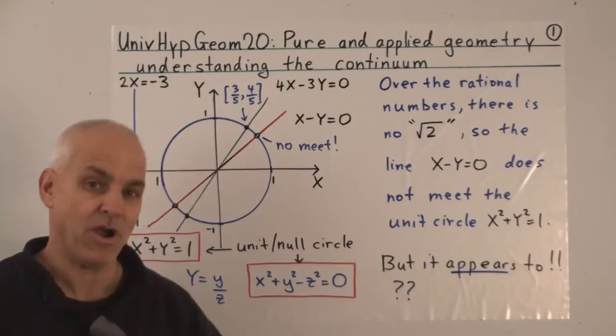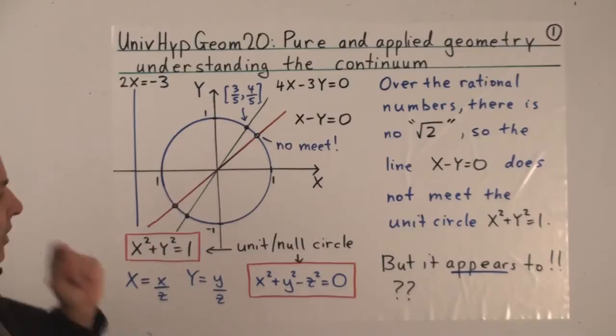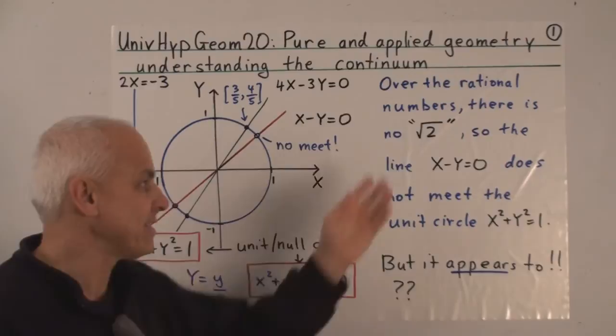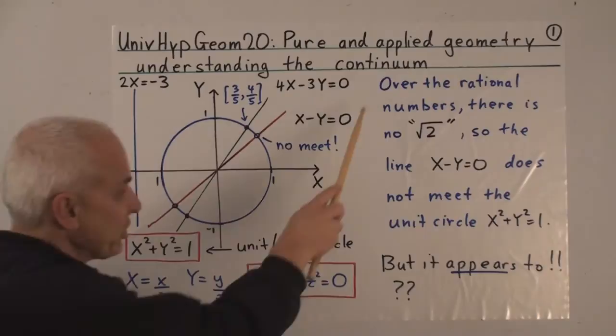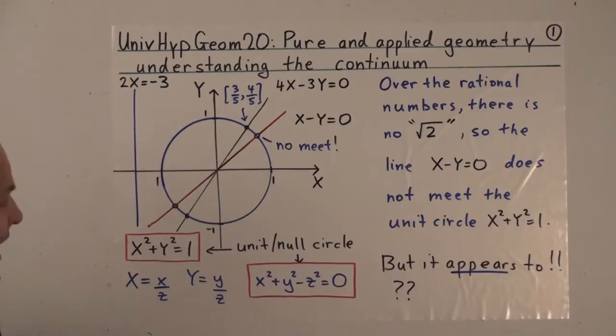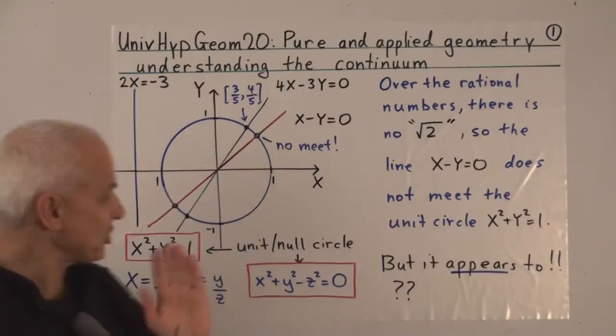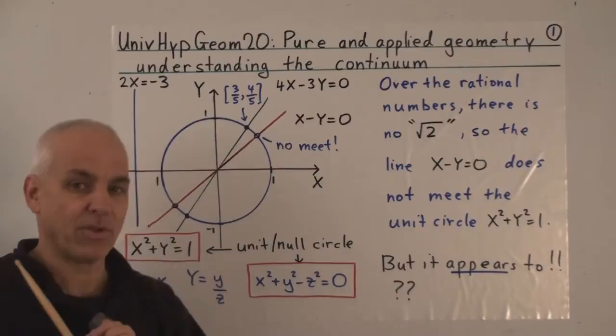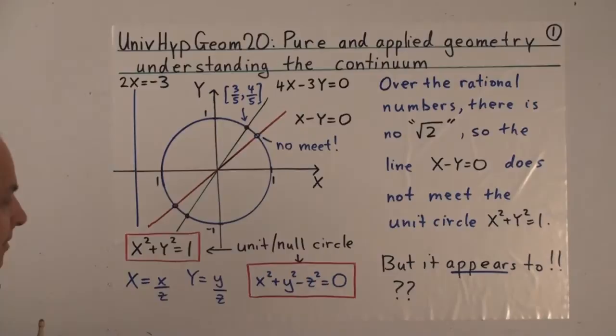Rational numbers are the fundamental framework for doing mathematics correctly. Root 2 is a very problematic object — it has been problematic for thousands of years, befuddled the ancient Pythagoreans, and is still a source of confusion today. So over the rational numbers, this line and the unit circle do not meet. However, the picture certainly suggests that they do. There's a discrepancy between the pure mathematics and the picture: it looks like the line meets the circle, but there's a subtle number-theoretical condition that has to be satisfied for it to actually do so.